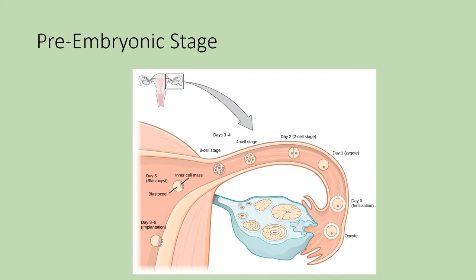HCG is commonly referred to as the pregnancy hormone, and its production begins once implantation has occurred. In this diagram, it shows ovulation occurring, then fertilization, then cell division beginning. There are minor peristaltic movements that move the developing cells down toward the uterus. By about a week from fertilization, you've got the blastocyst stage and implantation occurring in the uterus.